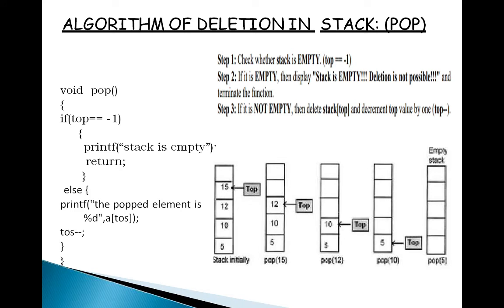Next is the pop operation. Before deleting an element from the stack, check whether the stack is in an empty state. If it is empty you do not perform the pop operation; if not, you take the element from the stack. The first step checks whether top equals minus 1. If it is minus 1 the stack is empty, and you raise an error message that deletion is not possible. If the stack is not empty, you delete the top element and then decrement the top value by 1.